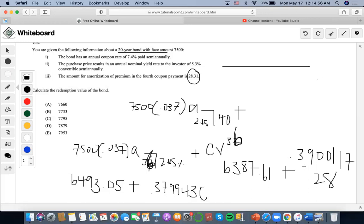So I'm going to subtract both values. So what I could do here is I could do $6,493.05 minus $6,387.61 and get $105.44.